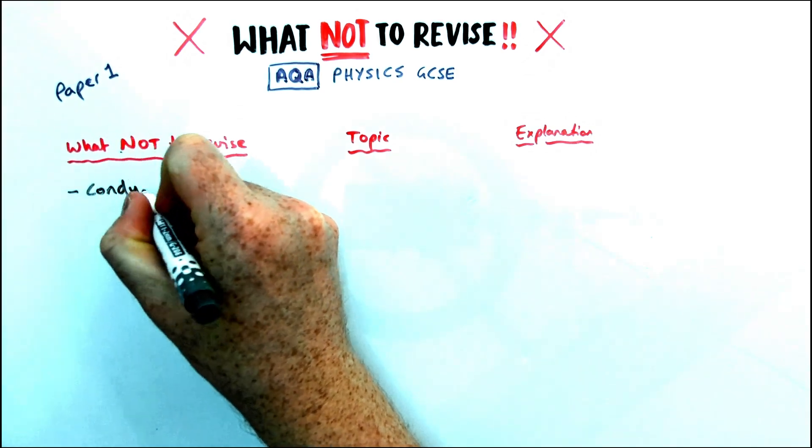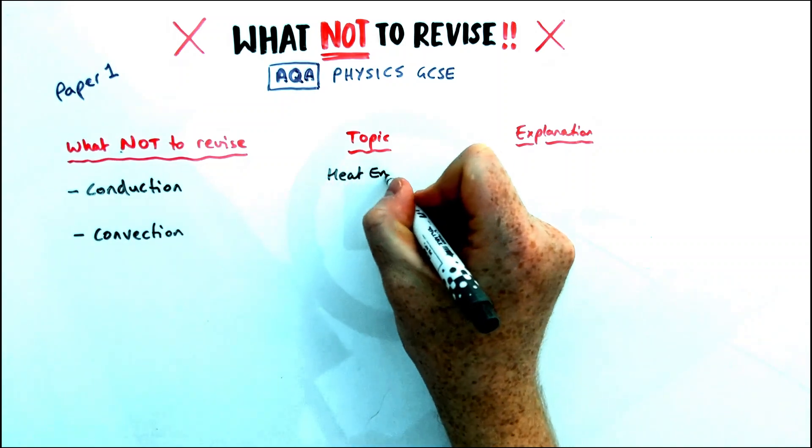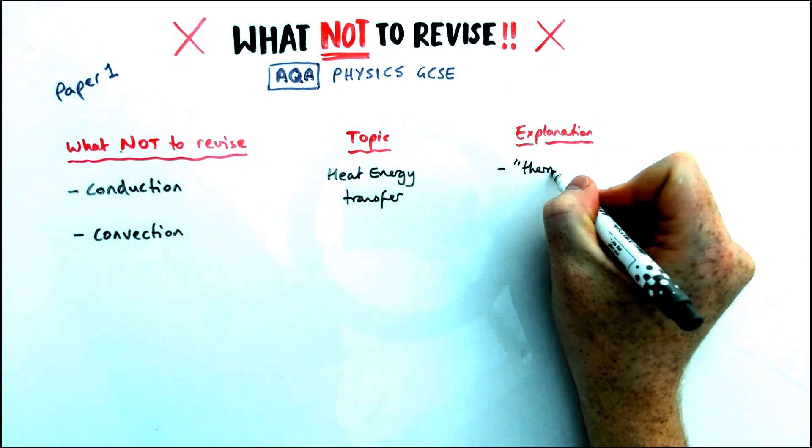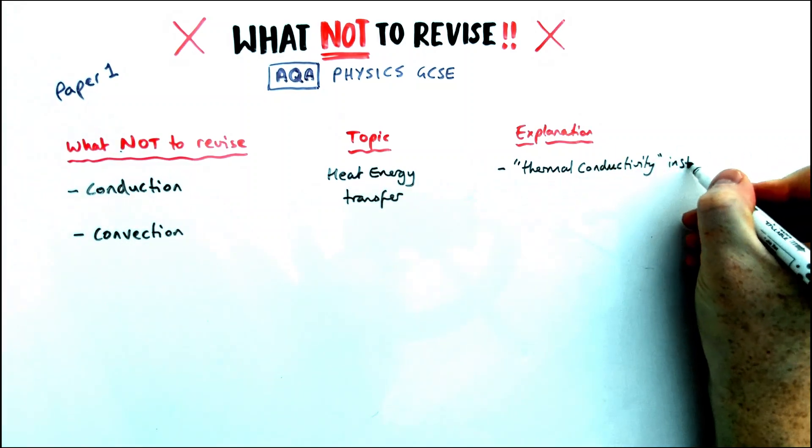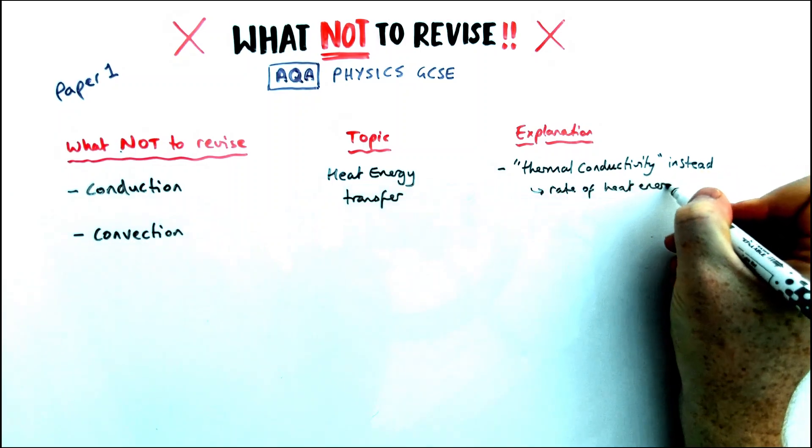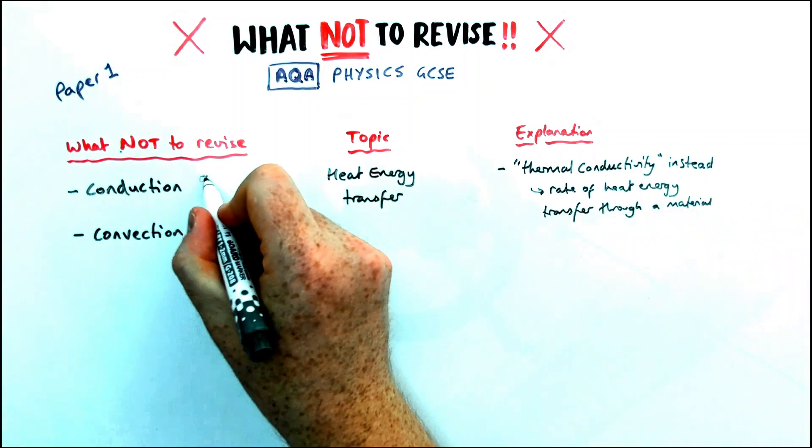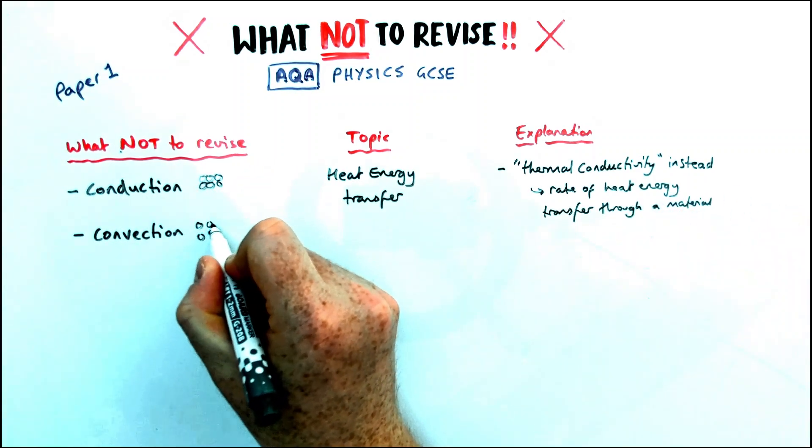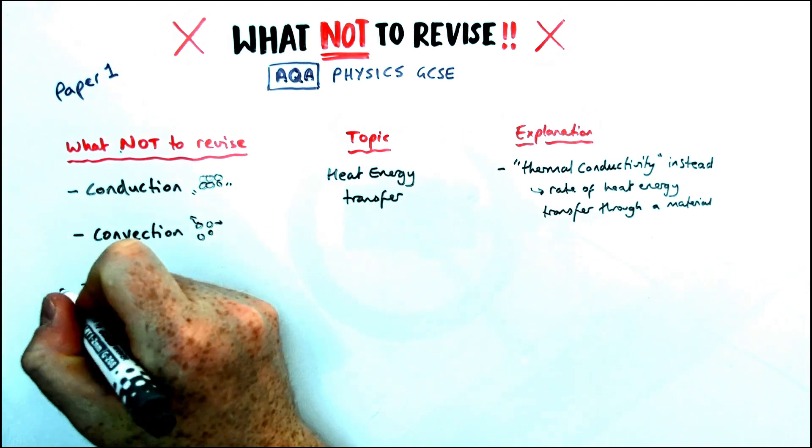The first thing that doesn't appear on the AQA specification is conduction and convection, which is a bit interesting. It'll be in the heat energy transfer topic, and instead they want you to use phrases like thermal conductivity. They might use the word conduction, but only in the context of thermal conductivity, which is the rate of heat energy transfer through a material. It's not mentioned on specification, it's not required knowledge on any past papers.